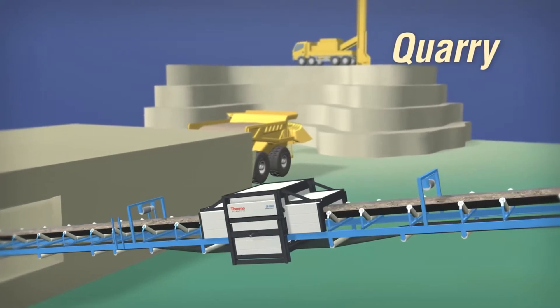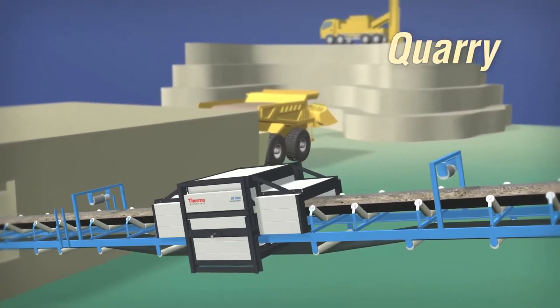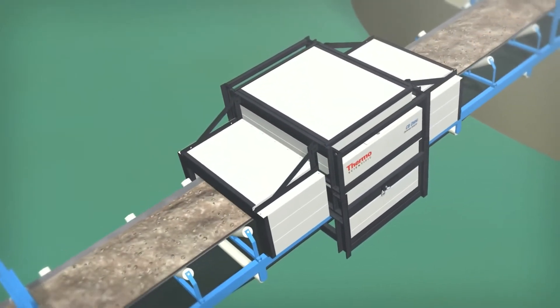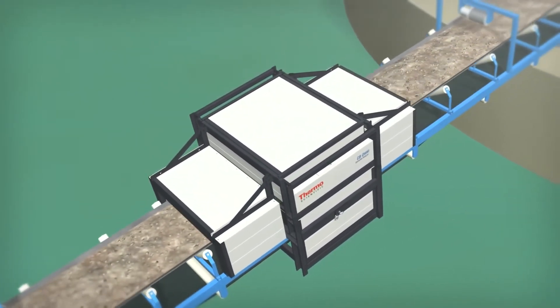In the quarry, the system can be used to sort materials based on raw material quality or, more commonly, to monitor and control the chemistry of a pre-blending stockpile.